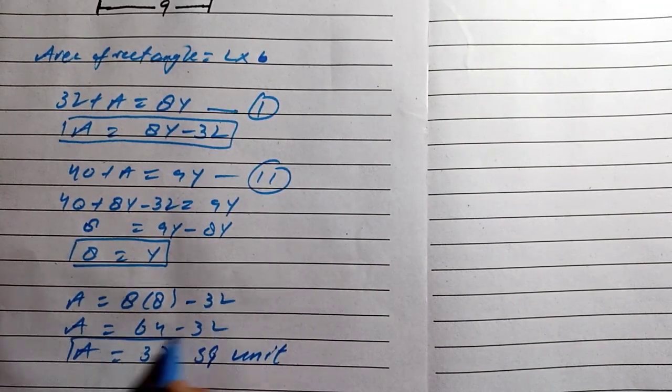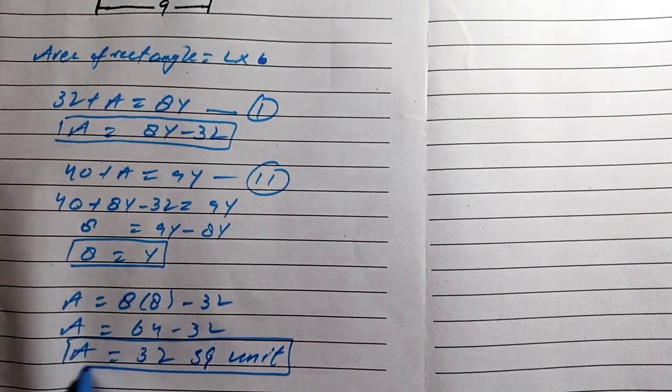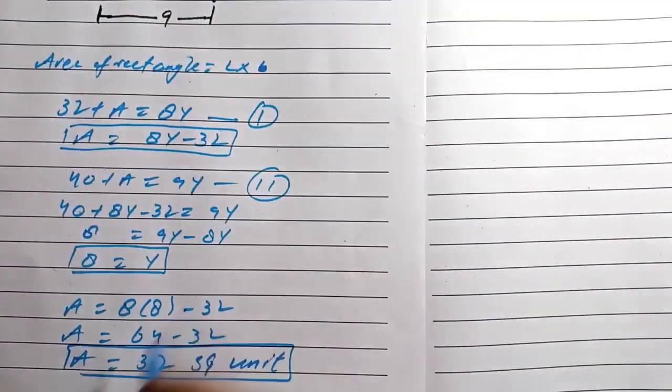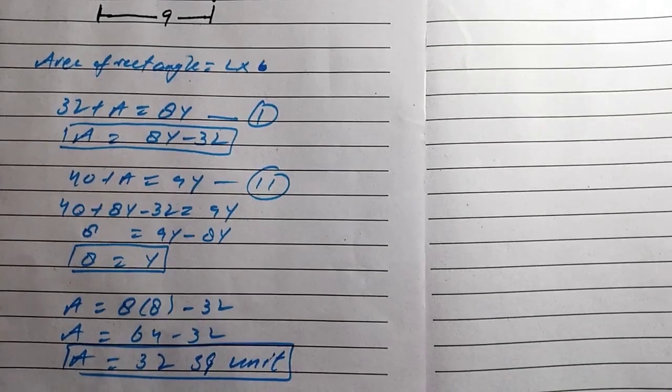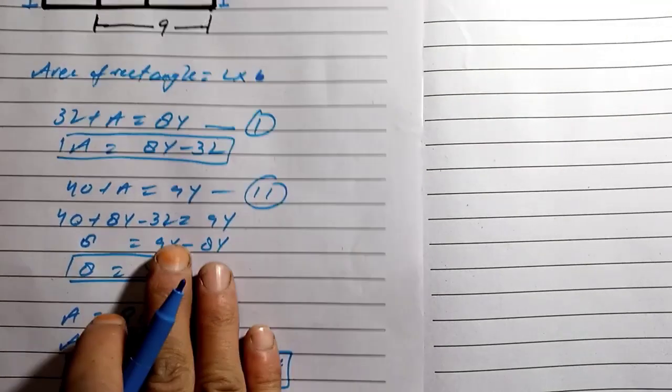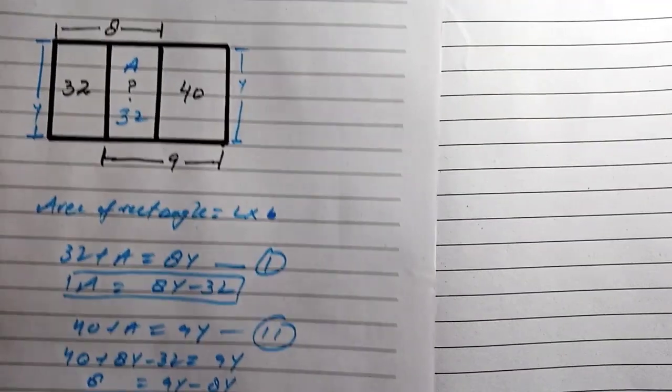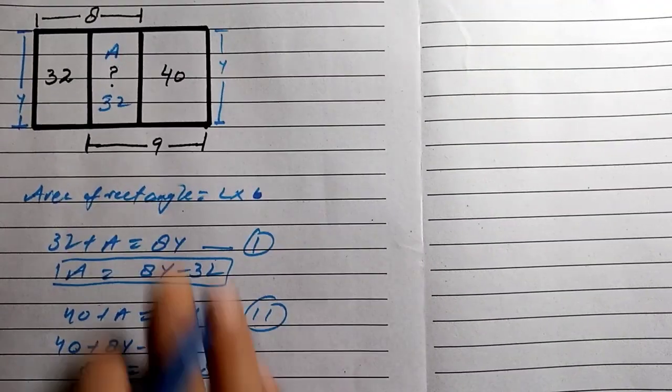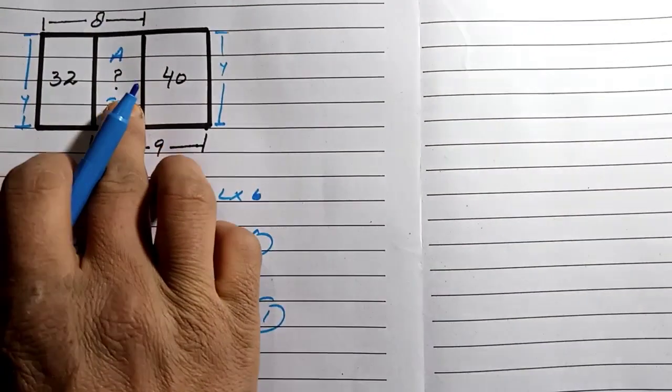So a equals 64 minus 32, therefore a equals 32 square units. This is our required area of this region, which is 32 square units. This is the first method to find the area of this region.